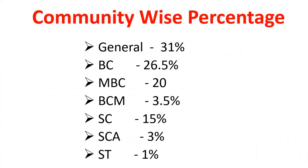We can read the DnBase vacancy details including: BC is 26.5%, MBC is 20% of vacancy, BCM is 3.5% of vacancy, SEA is 3.5% of vacancy, and ST is 1.0% of vacancy. So, we will post the calendar and filter.